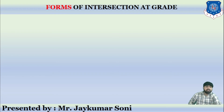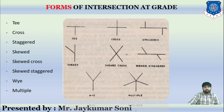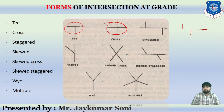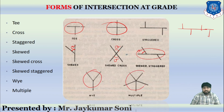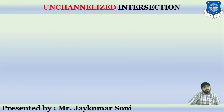Let us discuss about the various kinds of forms of intersection at grade. It can be of T-shape, cross shape, staggered — which looks like an offset arrangement — skewed, which makes a certain angle theta, both skewed and staggered, Y-shape, and it can also be of multiple shape where various kinds of crossings are there. These are the various forms of intersection at grade.